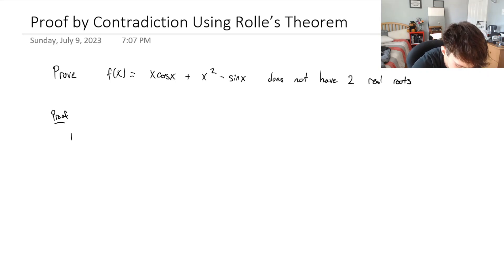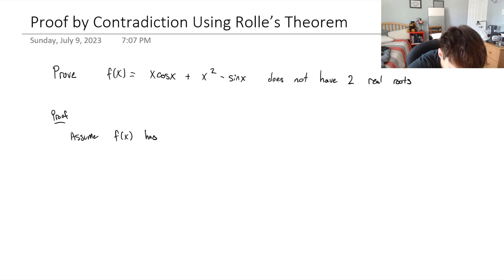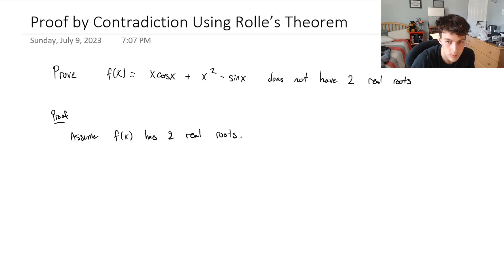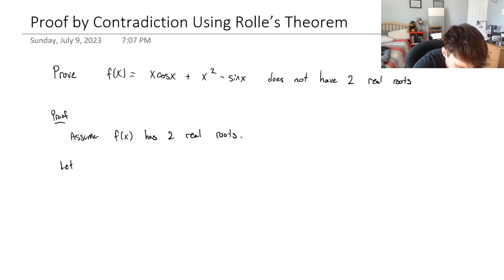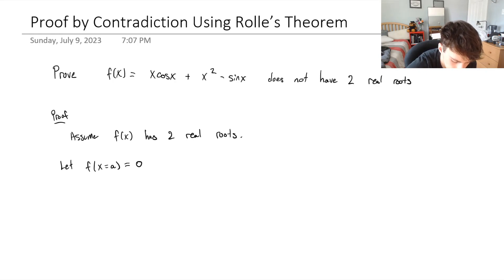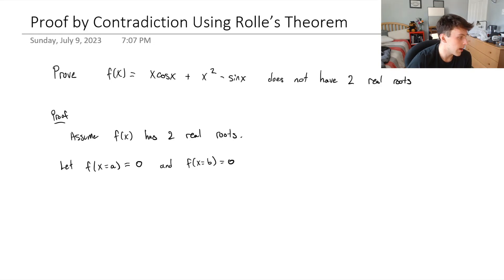So let's assume that f(x) has two real roots. Let f(a) = 0 and f(b) = 0. All I've done now is just define our two real roots, and those are f(a) and f(b).